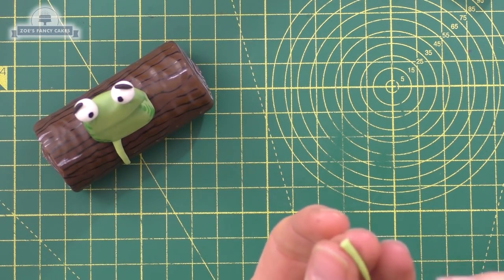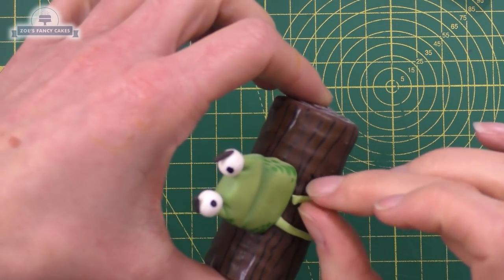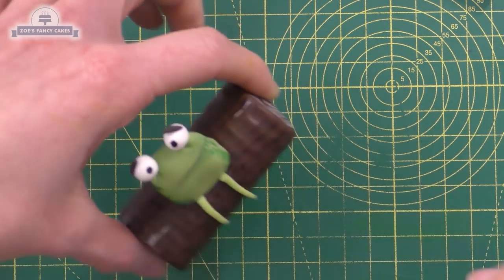Slightly thicker where they're going to attach to the body. Just going to put a little bit of water on there again. We're going to press them up tight against the frog's body, sticking them in place on the chocolate log.